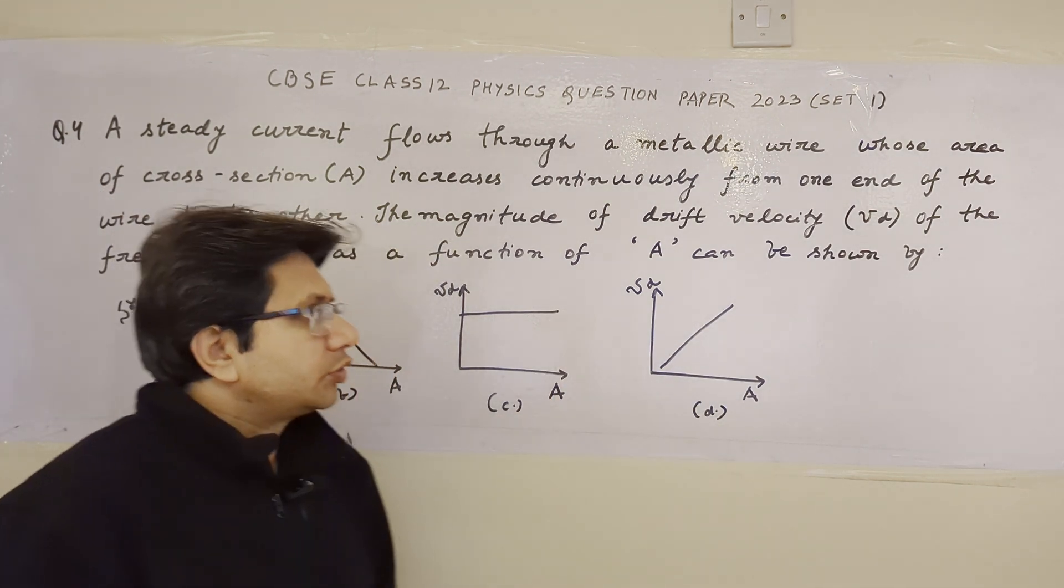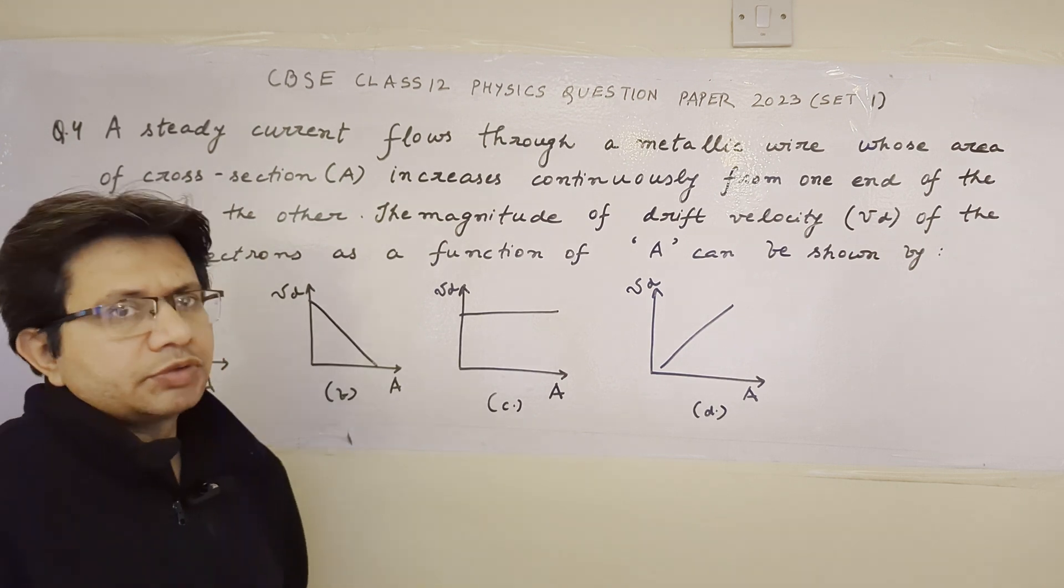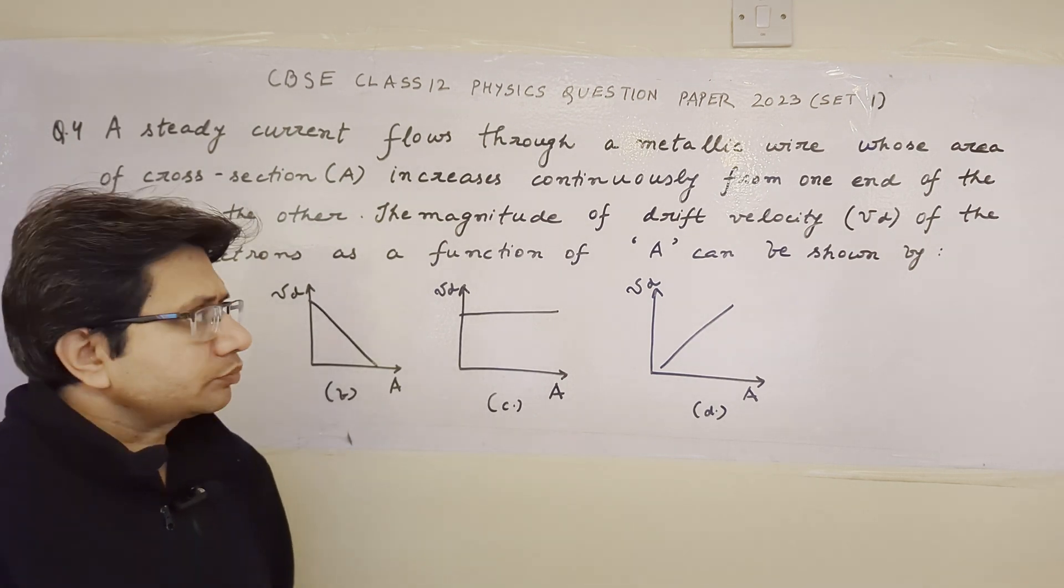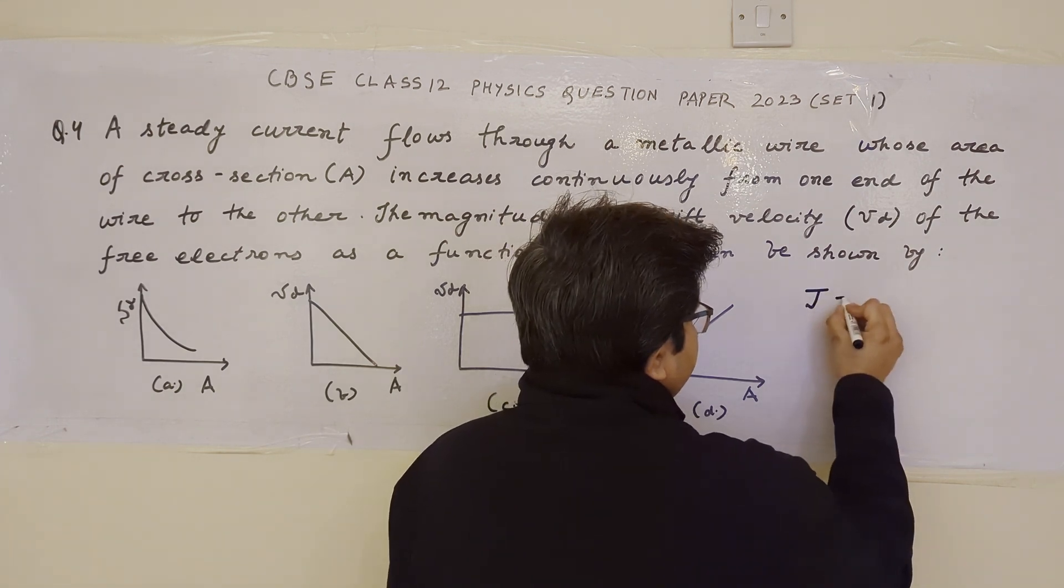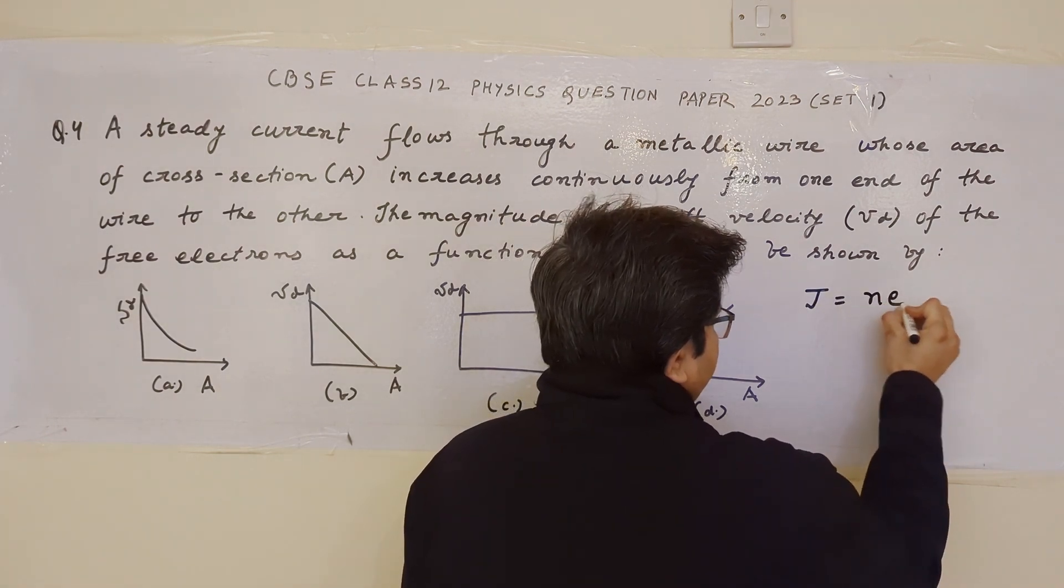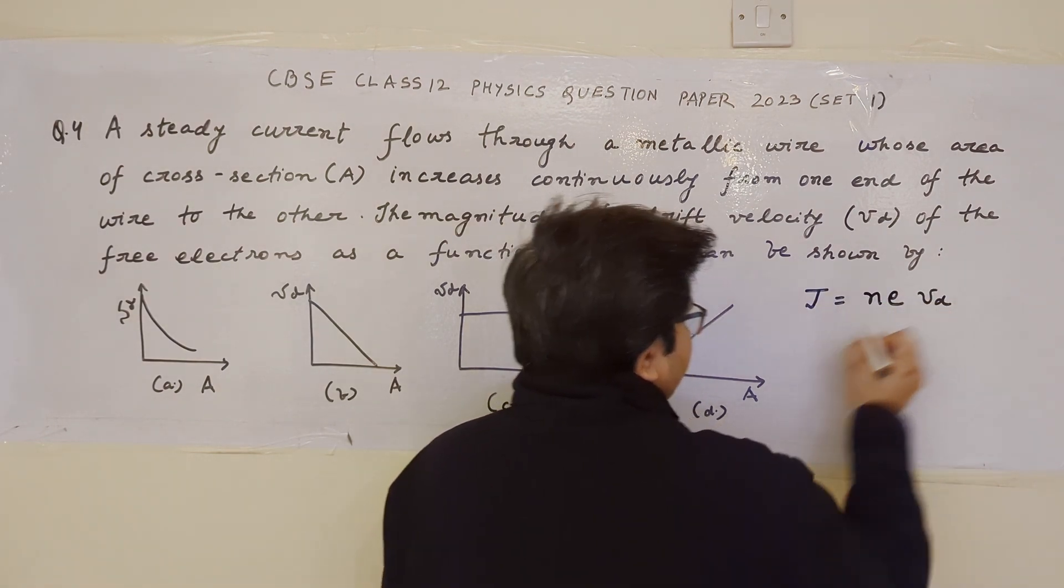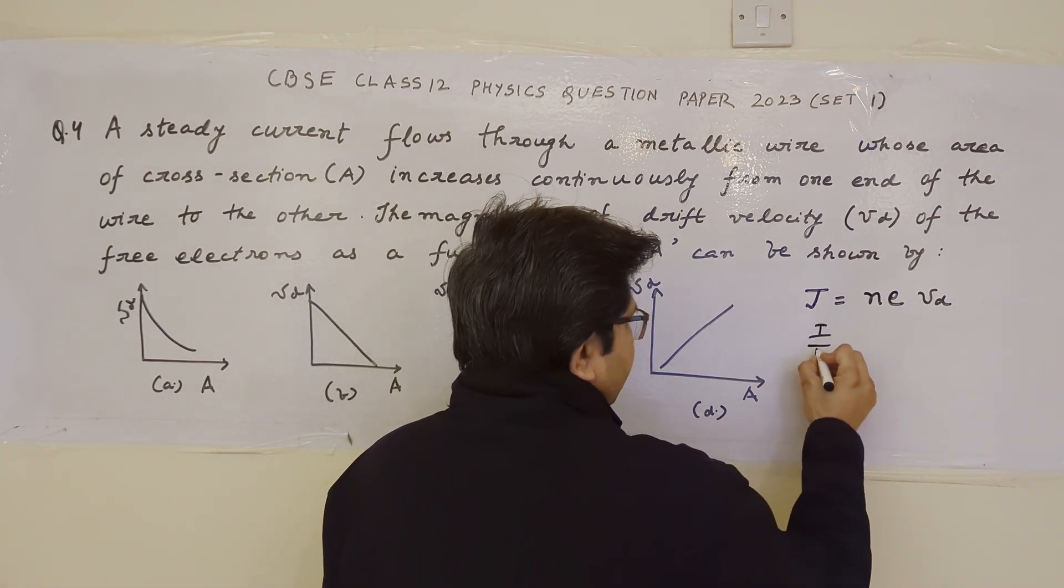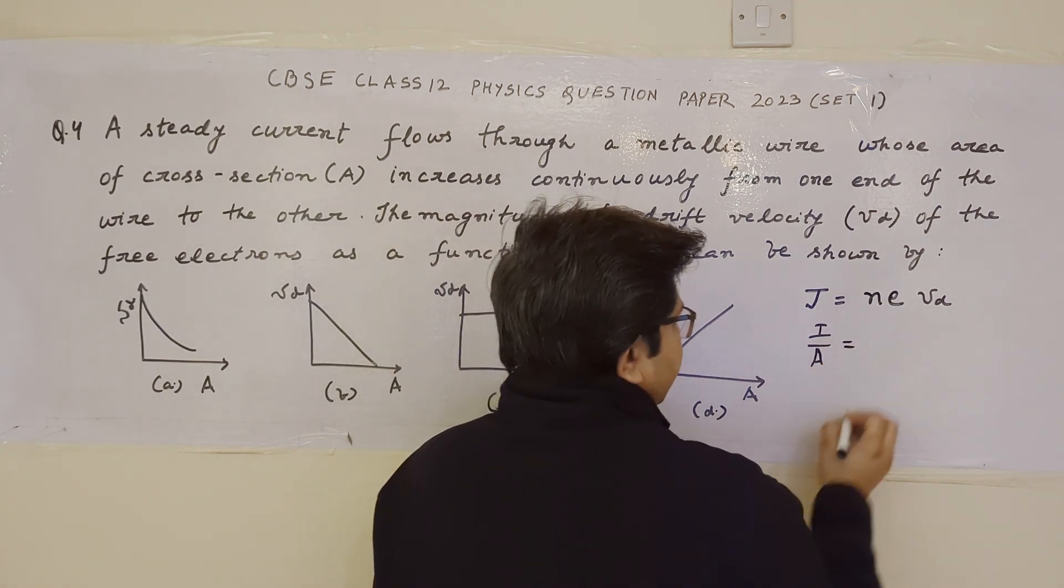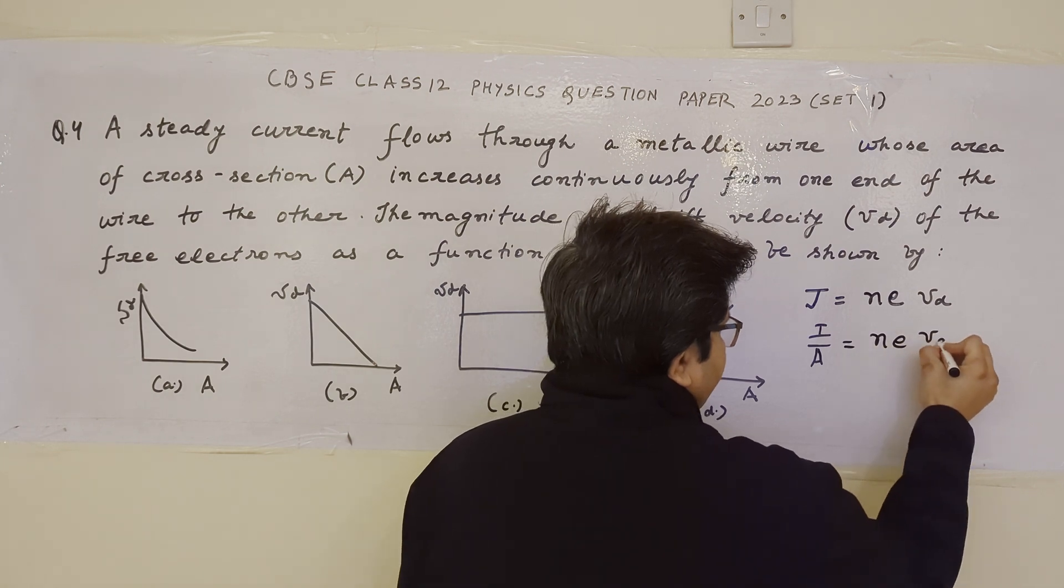So in this particular problem, we have to know the relationship between the drift velocity and the area. We know the formula that the current density j equals n e v_d, where j is the current density, which is I upon A. Current per unit area is equal to n e v_d.